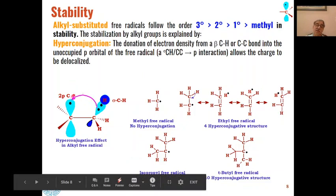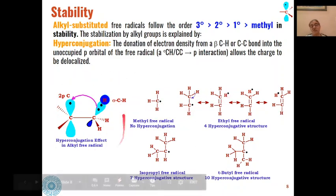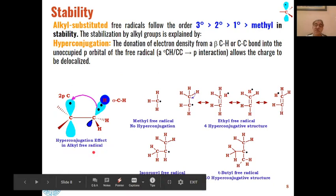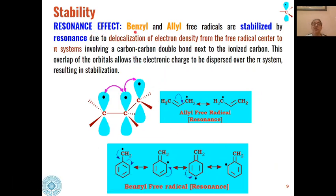This is the process of hyperconjugation: the carbon-hydrogen bond gives one electron, H goes as an H radical, and this is the process of hyperconjugation in an alkyl free radical. Then there is the resonance effect. The benzyl and allyl free radicals are stabilized more in comparison to alkyl free radicals because of the presence of resonance due to delocalization of electron density from the free radical center to the pi system.